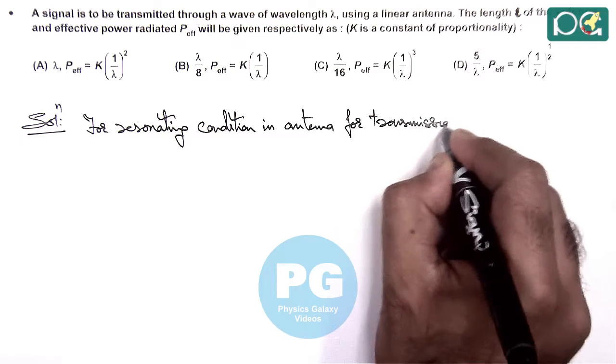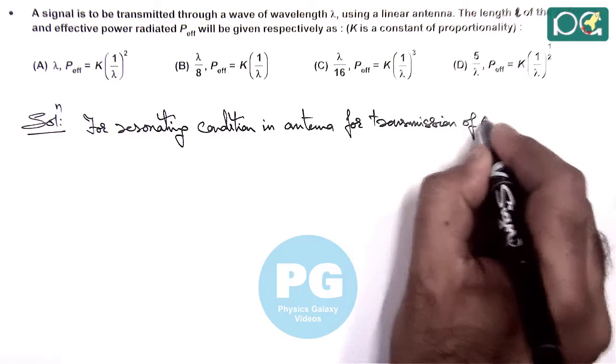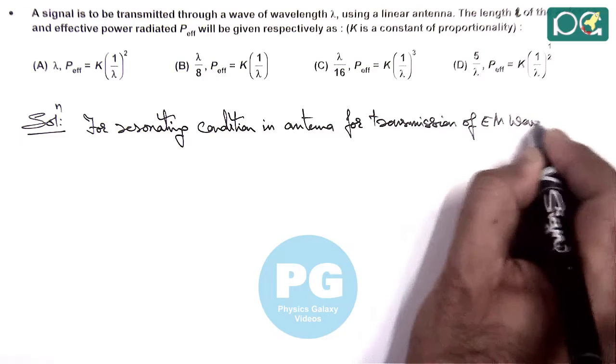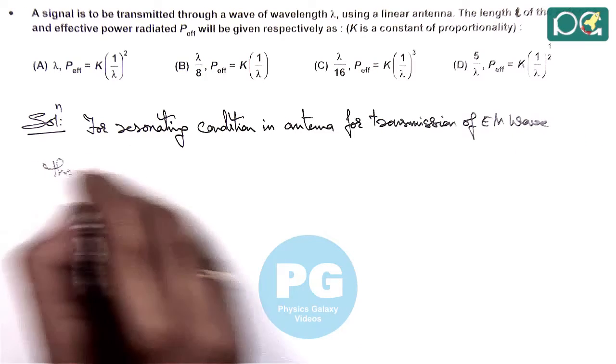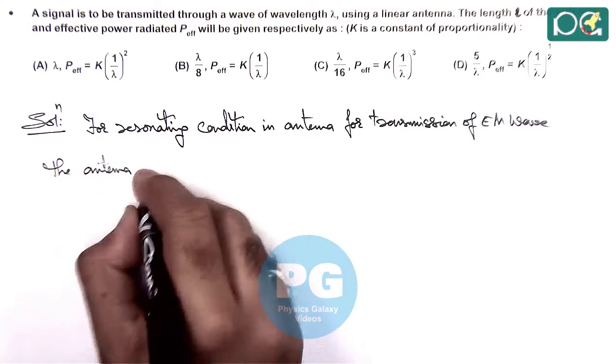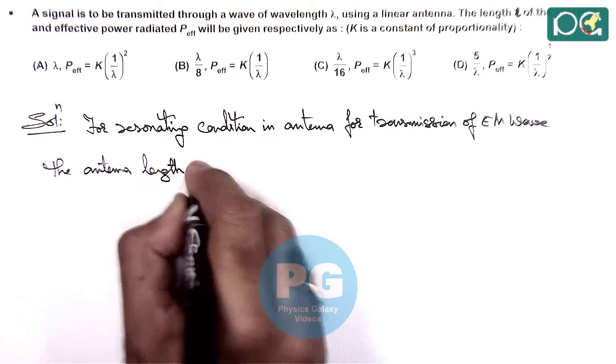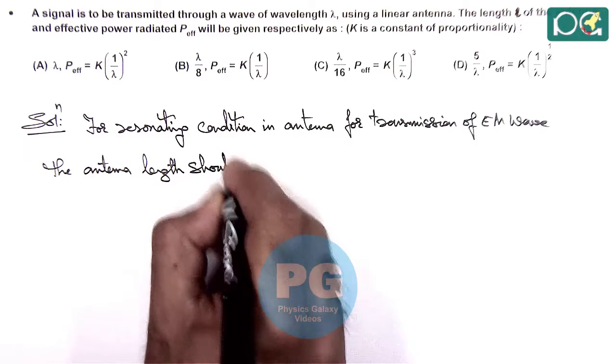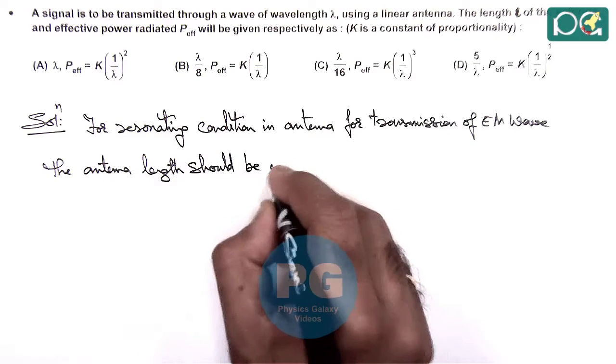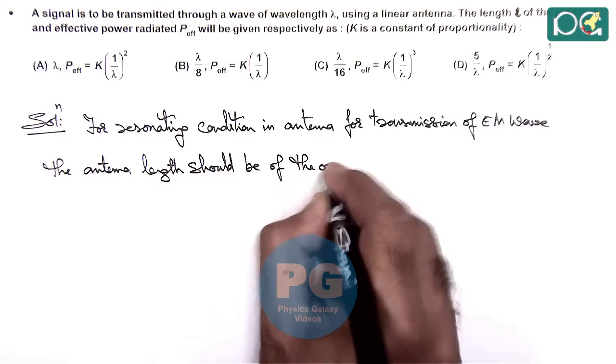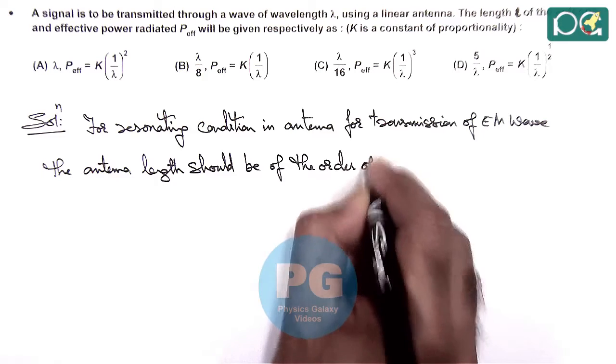For transmission of electromagnetic wave the antenna length should be of the order of lambda.